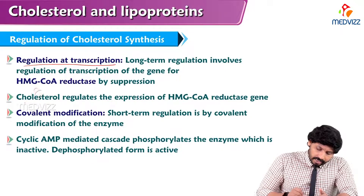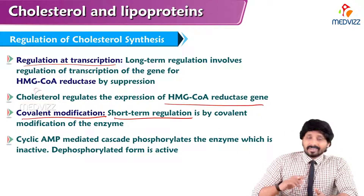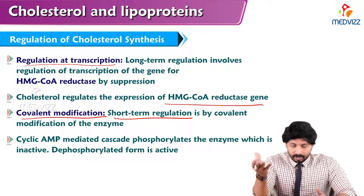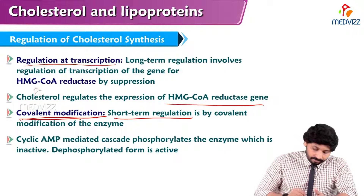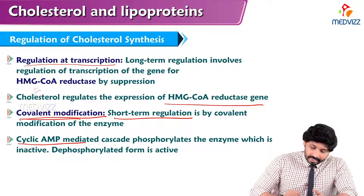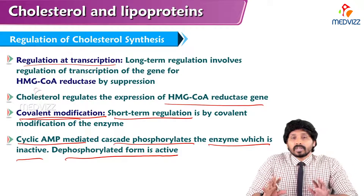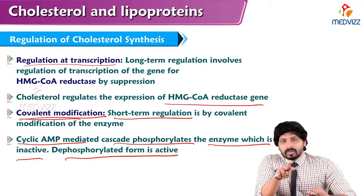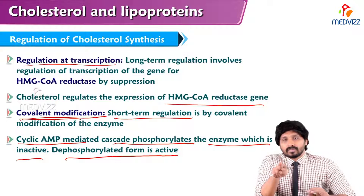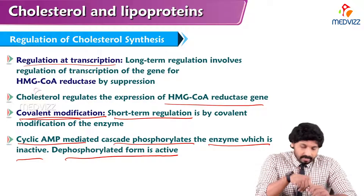Cholesterol also regulates HMG-CoA reductase via covalent modification. Long-term regulation is through transcription, while short-term regulation is by covalent modification of the HMG-CoA reductase enzyme. The cyclic AMP-mediated cascade phosphorylates the enzyme, making it inactive, while the dephosphorylated form of HMG-CoA reductase is active. This is similar to the glycogen synthase and glycogen phosphorylase mechanism studied in glycogen metabolism.